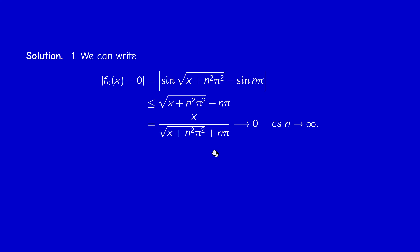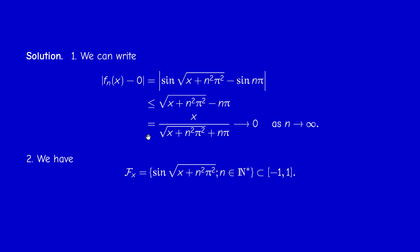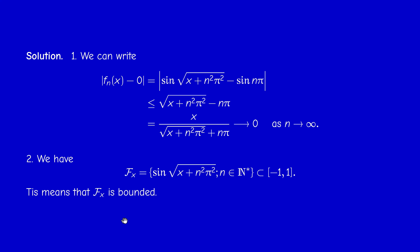You can try to determine whether the convergence is also uniform. For pointwise boundedness: since the sine function is always between −1 and 1, each fₙ is between −1 and 1. So F_x is contained in [−1, 1] for every x, which means pointwise boundedness.